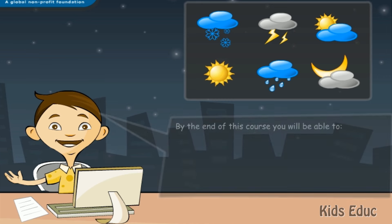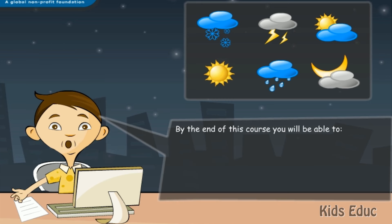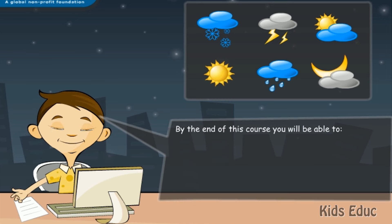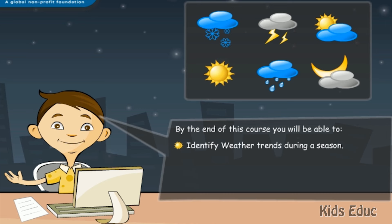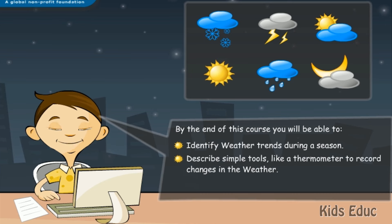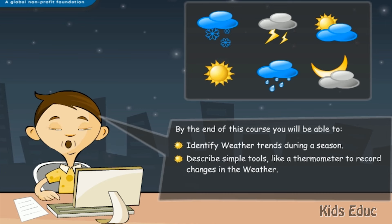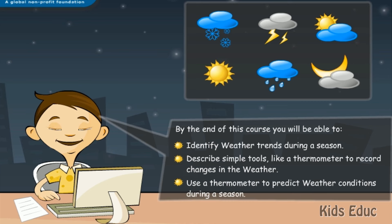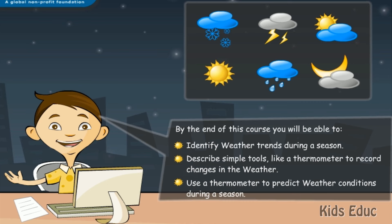By the end of this course, you will be able to identify weather trends during a season, describe simple tools like a thermometer to record changes in the weather, and use a thermometer to predict weather conditions during a season.